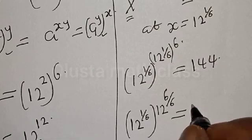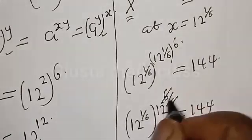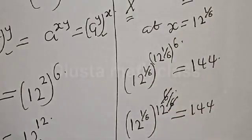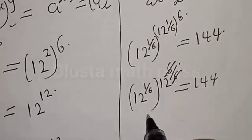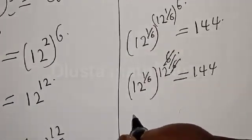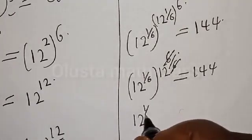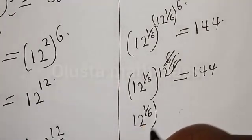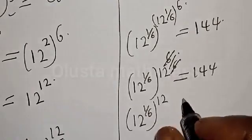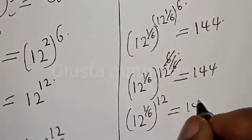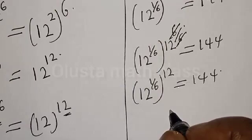From here, 12 raised to power 1 divided by 6, raised to power 12 raised to power 6, the 6 cancels. We are left with 12 raised to power 1 divided by 6 raised to power 12, which must equal 144.